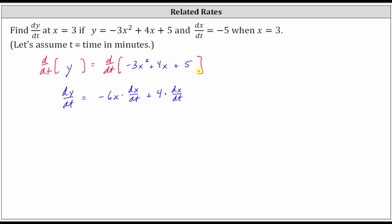And then finally, plus the derivative of five with respect to t, which is zero. Notice because we know dx/dt equals negative five when x equals three, we have all the information we need to determine dy/dt when x equals three.